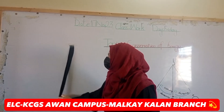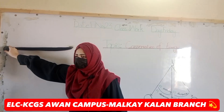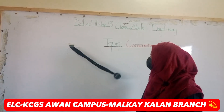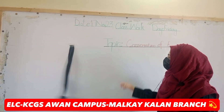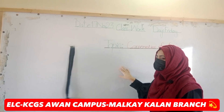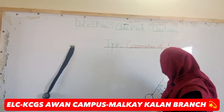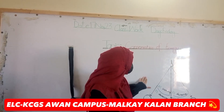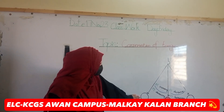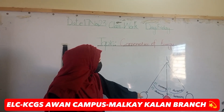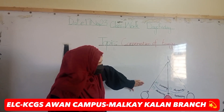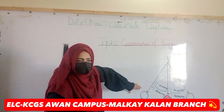When we take it to a certain height again, the potential energy will increase and kinetic energy will decrease, and again the potential energy will increase. This is shown in the diagram: when we take a certain height, the potential energy increases.